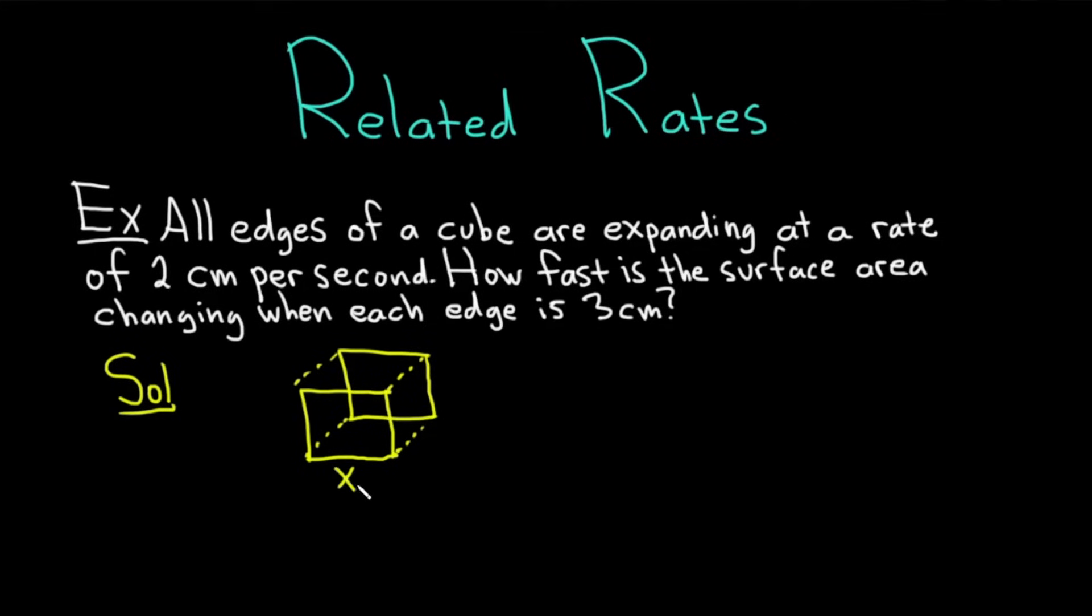So if we call this edge x, since it's a cube, all the edges are the same length. This one is also x. The question is asking for the surface area, so we should come up with a formula for the surface area of a cube. You'll notice from the picture the cube has six sides. It has one up top, one on the bottom, and then four all around. The area of any particular side is going to be x times x, which is x squared. So for all six sides, it'll just be 6x².